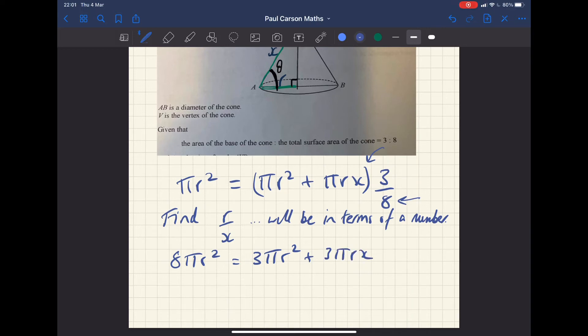You see here that 8πr² equals 3πr². So I can move that over. So I get 5πr² is equal to 3πrx. Or you could say that 3πrx must be 5πr², because that's how I get eight. 3πr² plus 5πr². Whichever way you want to look at it, whichever is more intuitive.